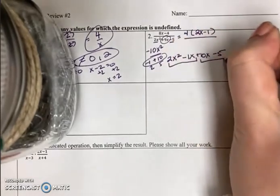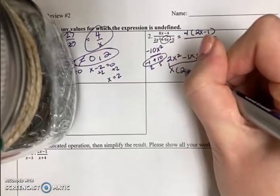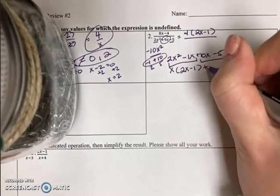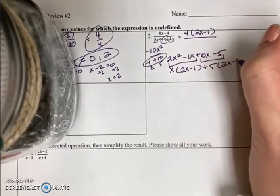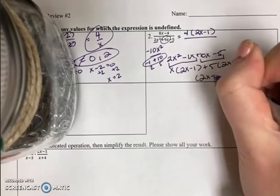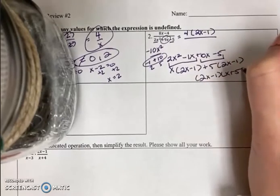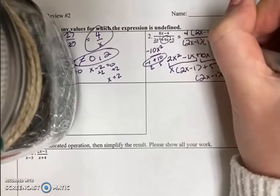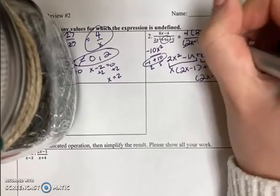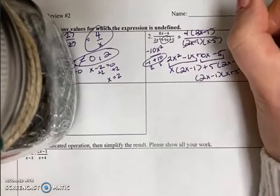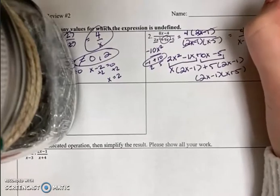2x squared, replacing the middle term with the terms I decided to use. So minus 1x plus 10x minus 5. We factor by grouping, which is where you pull out a GCF. I get 2x minus 1 times x plus 5. The 2x minus 1's cancel. I'm left with 4 over x minus 5.